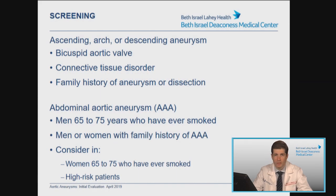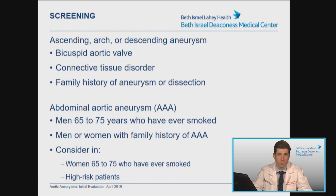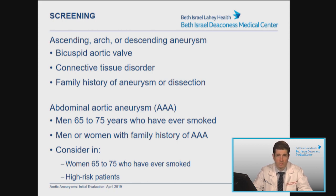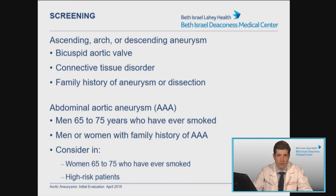In terms of screening, ascending, arch, or descending aneurysms are most always asymptomatic and found incidentally on imaging. Patients where you would consider further evaluation include those with a known bicuspid aortic valve, those with a connective tissue disorder, or those with a family history of an aneurysm or dissection where there is a high probability of a genetic component. For AAA screening, these are more well-defined. For Medicare coverage, it applies to male patients 65 to 75 years old who have ever smoked — some consider greater than 100 cigarettes as the threshold. Men or women with a family history of AAA, and you could consider screening in women 65 to 75 who have ever smoked or those who are otherwise high risk.